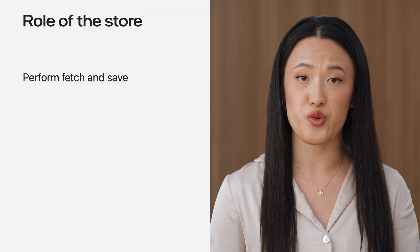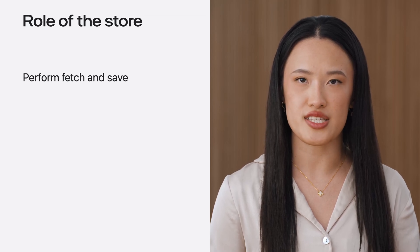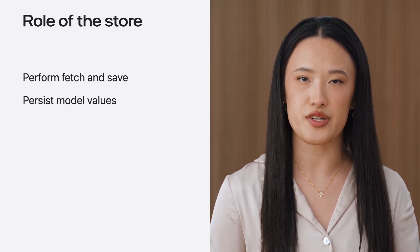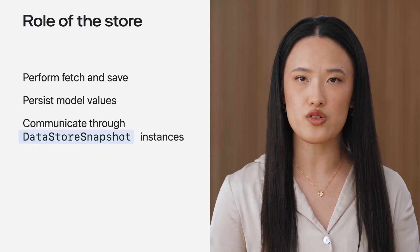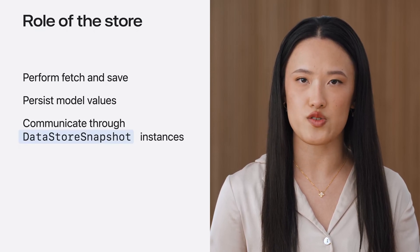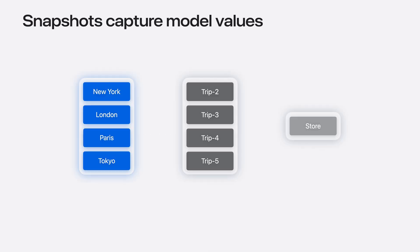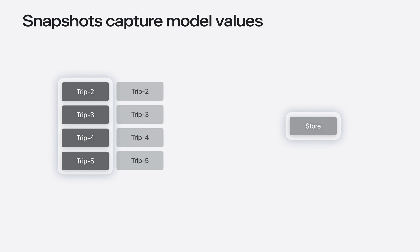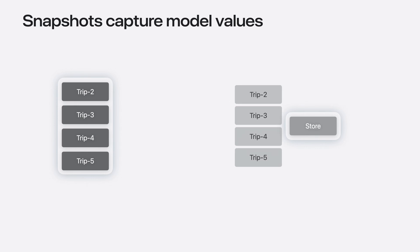The model context and store communicate using a set of requests and responses that define operations like fetch or save. The store's role is to provide the implementation for how model values are persisted. This communication leverages a sendable, codable representation of the model called the data source snapshot. In the SampleTrips app, the view communicates with the model context using persistent models. However, when the model context needs to communicate with a store, it creates a snapshot to hold the current state of the model. The snapshot is a sendable, codable container of the values in the model at that point in time. Like persistent models, each is identified by a persistent identifier.